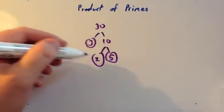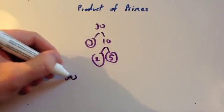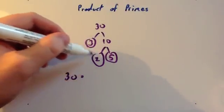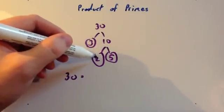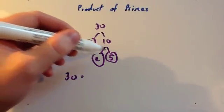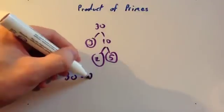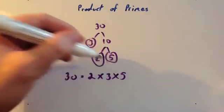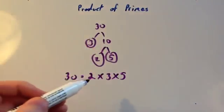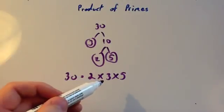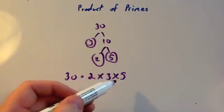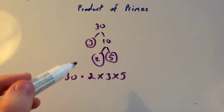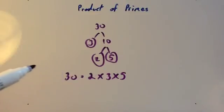And then we're finished. So 30 equals — putting these three numbers in numerical order — 2 times 3 times 5. Let's just check that: 2 times 3 is 6, times 5 is 30. So we've written 30 as a product of prime numbers.